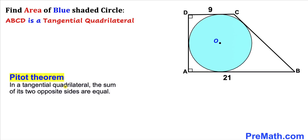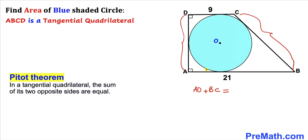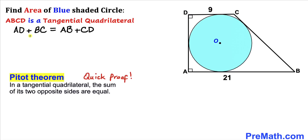According to the Pitot theorem, in a tangential quadrilateral, the sum of its two opposite sides are equal. In other words, side length AD plus side length BC equals the sum of the other two side lengths AB plus side length CD.